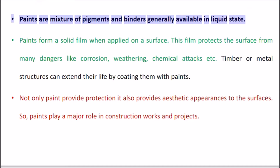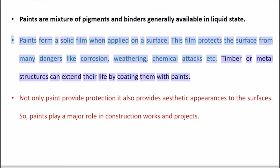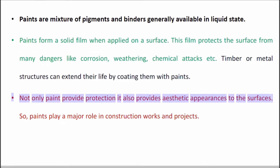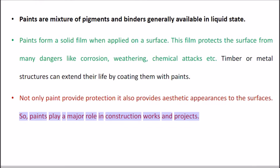Paints are a mixture of pigments and binders, generally available in liquid state. Paints form a solid film when applied on a surface. This film protects the surface from many dangers like corrosion, weathering, chemical attacks etc. Timber or metal structures can extend their life by coating them with paints. Not only do paints provide protection, they also provide aesthetic appearances to surfaces. So, paints play a major role in construction works and projects.